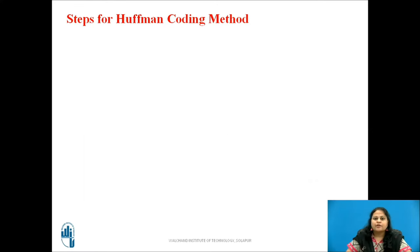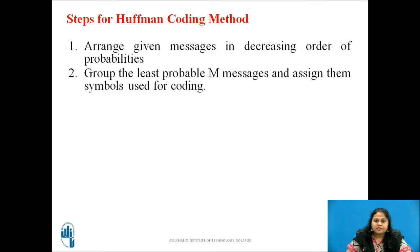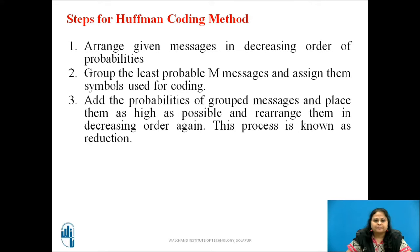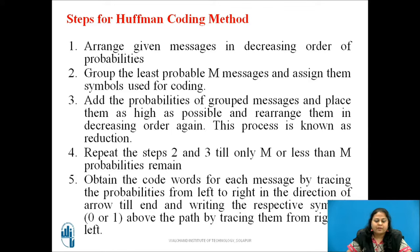Now let us see the steps used for Huffman coding method. First step: arrange the given messages in the decreasing order of probabilities. Group the least probable M messages and assign them the symbols used for coding. Add the probabilities of the grouped messages and place them as high as possible and rearrange them in the decreasing order again. This process is known as reduction. Next step: repeat steps 2 and 3 till only M or less than M probabilities remain in the final reduction. Obtain the code words for each message by tracing the probabilities from left to right in the direction of the arrow till the end, and writing the respective symbols 0 or 1 above the path by tracing them from right to left.